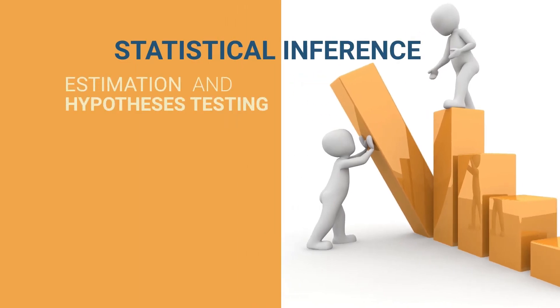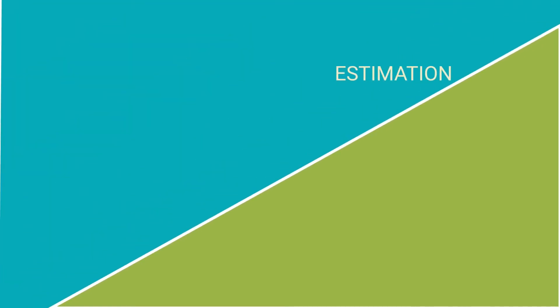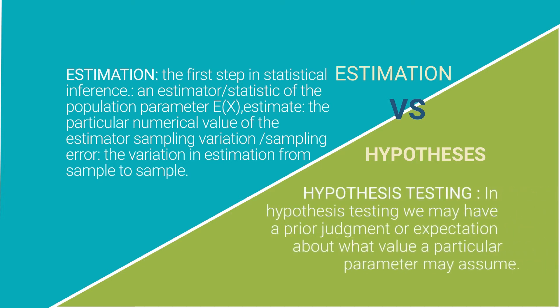Statistical inference purely talks about estimation and hypothesis testing. In our previous session, we covered estimation in detail, and this session focuses on basic parts of hypothesis testing. Statistical inference draws conclusions about a population — its probability density function — from a random sample drawn from that population. Estimation is the first step in statistical inference, describing the estimator as a statistic of the population parameter.